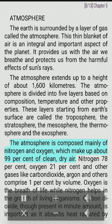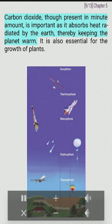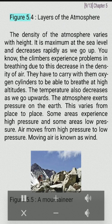The atmosphere is composed mainly of nitrogen and oxygen, which make up about 99% of clean, dry air. Nitrogen is 78%, oxygen is 21%, and other gases like carbon dioxide, argon and others comprise 1% by volume. Oxygen is the breath of life while nitrogen helps in the growth of living organisms. Carbon dioxide, though present in minute amounts, is important as it absorbs heat radiated by the Earth, thereby keeping the planet warm. It is also essential for the growth of plants.